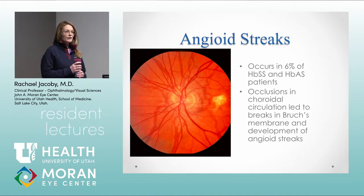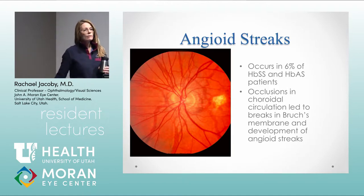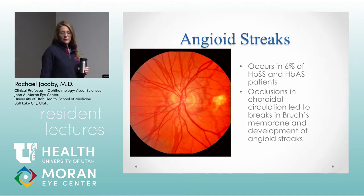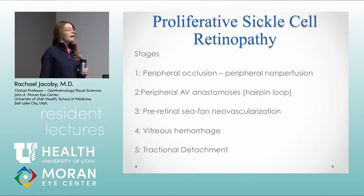In Utah, angioid streaks are most commonly seen with pseudoxanthoma elasticum. The staging of sickle cell retinopathy: Stage 1 is peripheral occlusions and non-perfusion; Stage 2 is peripheral anastomoses; Stage 3 is when you start to see the sea fan; Stage 4 is vitreous hemorrhage; and Stage 5 is tractional detachment.